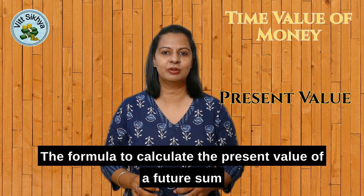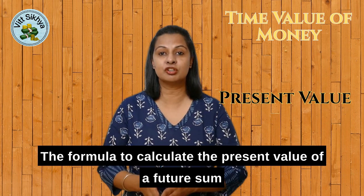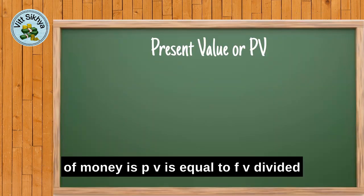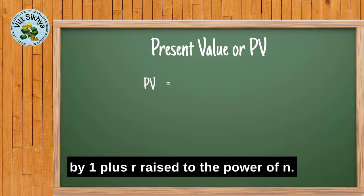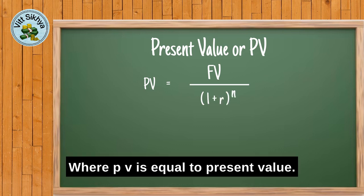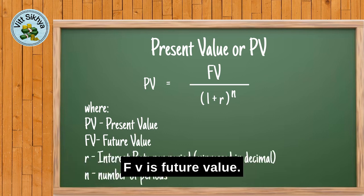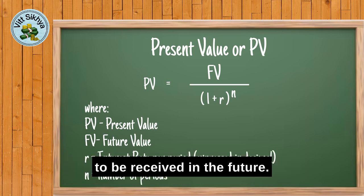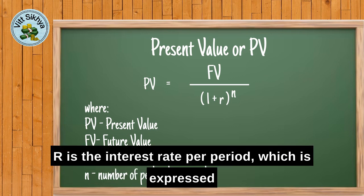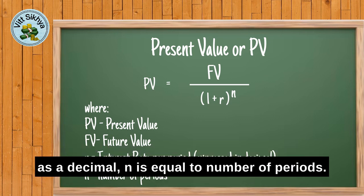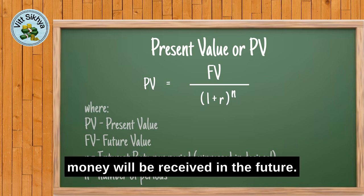The formula to calculate the present value of a future sum of money is: PV = FV / (1 + R)^N. Where PV is present value, FV is future value — the amount of money to be received in the future, R is the interest rate per period expressed as a decimal, and N is the number of periods, that is the time in which the money will be received in the future.